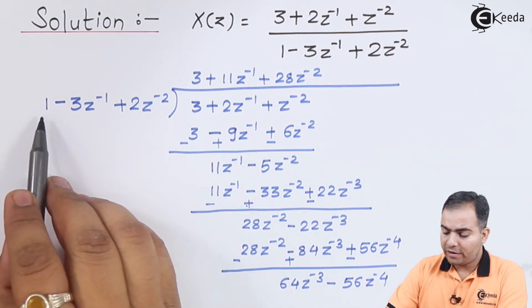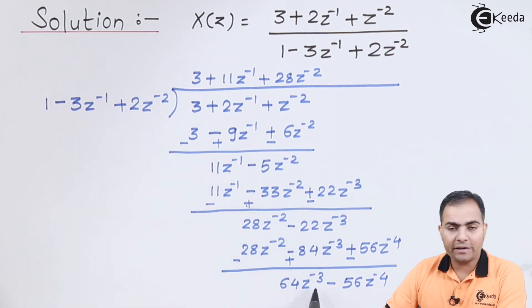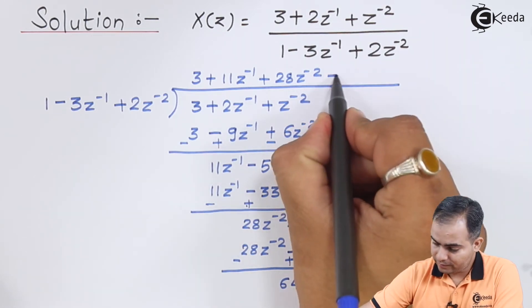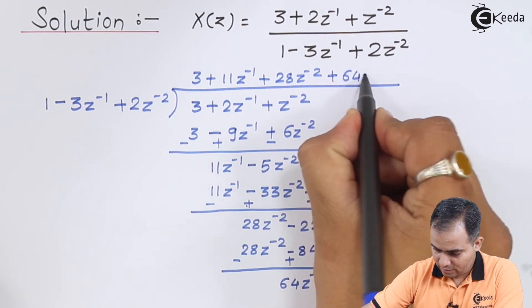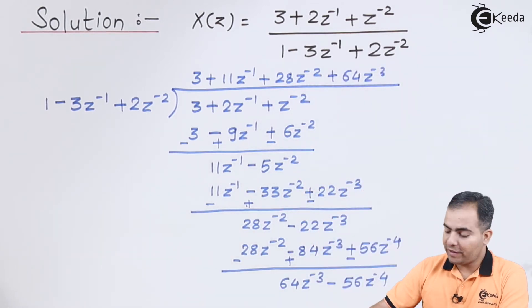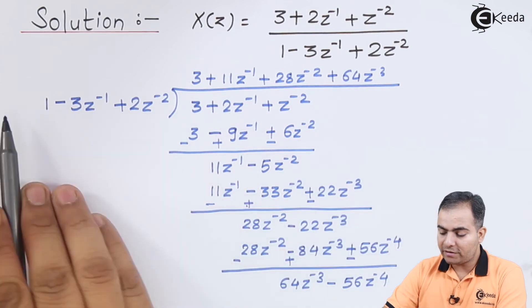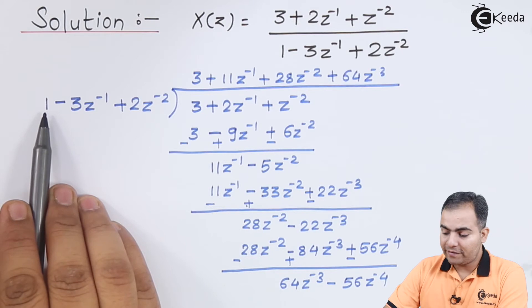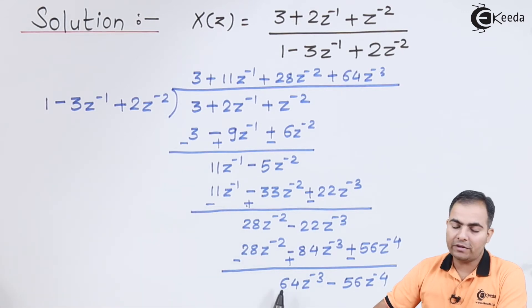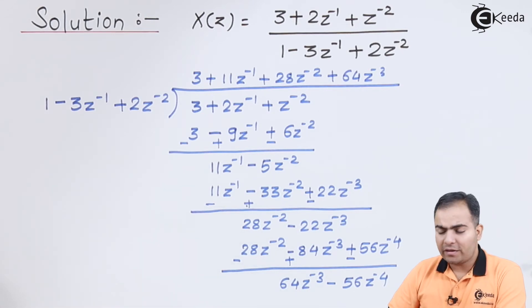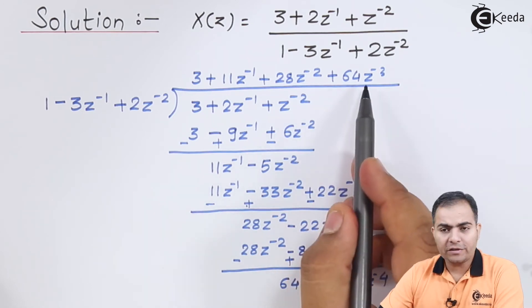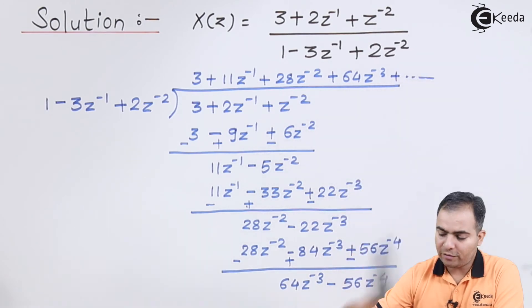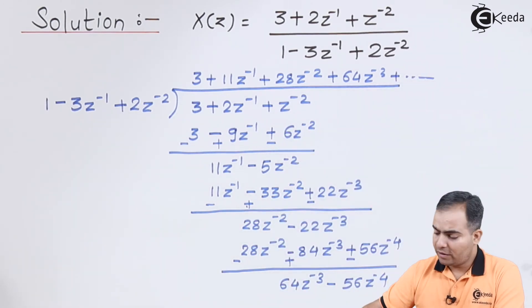If we want to get 62Z⁻³, which term do we multiply by 1? The answer is 62Z⁻³. We multiply 62Z⁻³ with the whole denominator. The first term cancels, but we will write only this part and stop here — this division goes on and so forth.